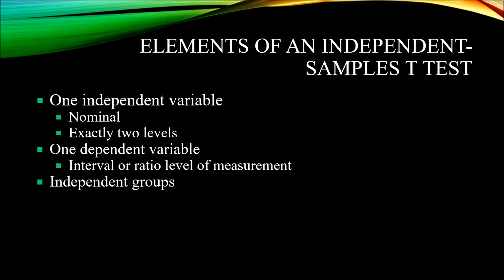Now let's take a look at the elements of an independent samples t-test — what we need to run it, what works and what doesn't. We need one independent variable, and this independent variable needs to be dichotomous: nominal and having exactly two levels. For an independent samples t-test, we can't use an independent variable that has more than two levels or that's measured at a continuous level of measurement. A common example of an independent variable we could use is gender, which has two levels — male and female — and those levels are nominal. So gender fits the criteria for an independent samples t-test.